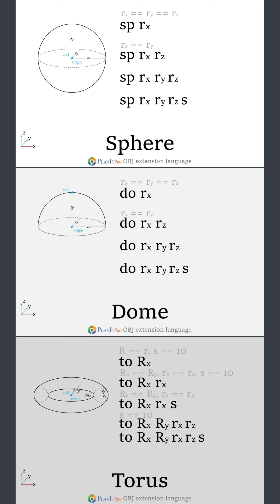Then for the torus there are two radii. The bigger Rx is the radius of the ring, which is the distance from the center of the pipe to the center of the torus. The small Rx is the radius of the pipe itself.